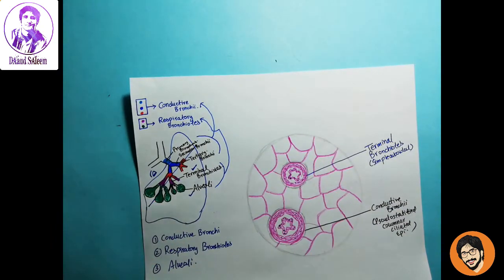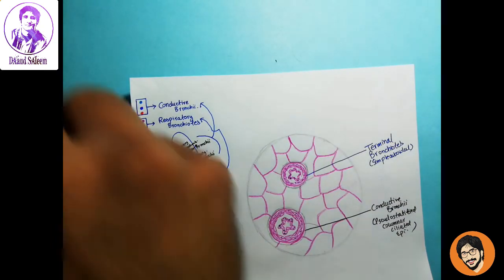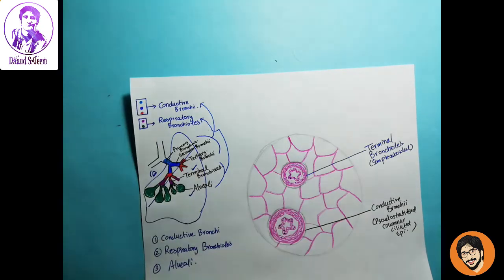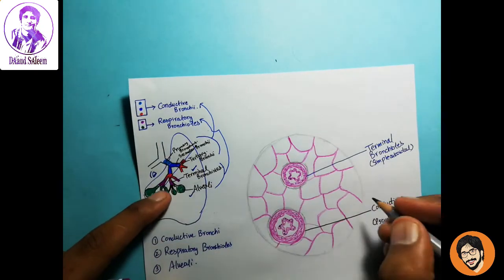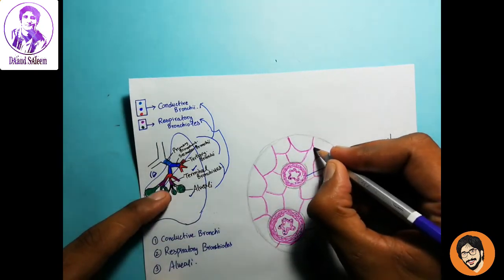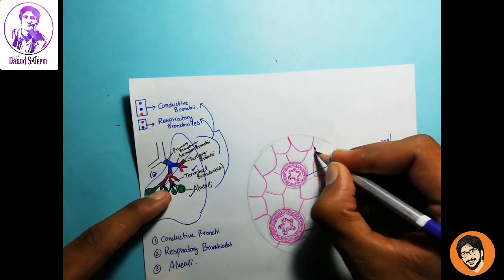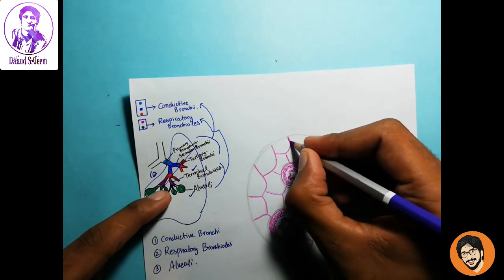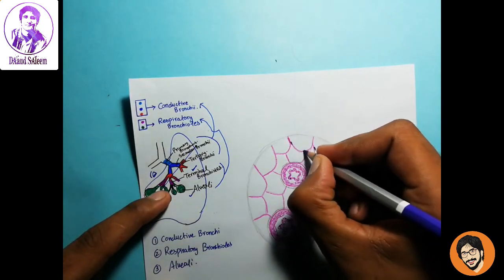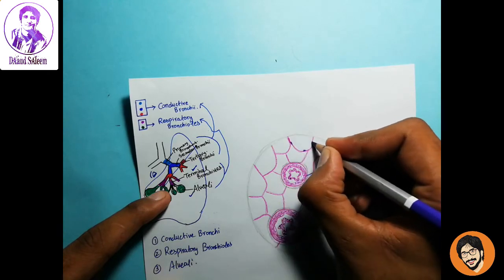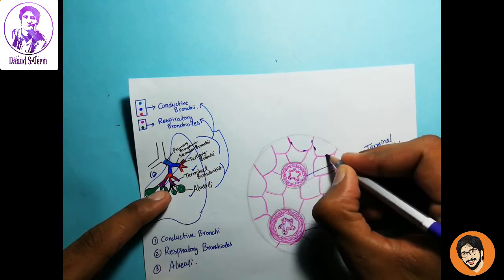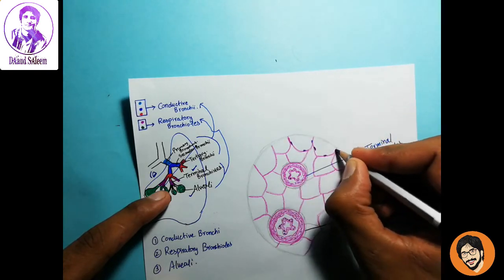This is your alveoli. Now you have to create nuclei. On the other side, the nuclei range.